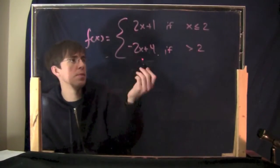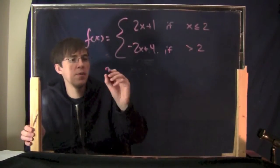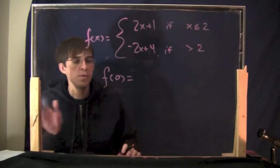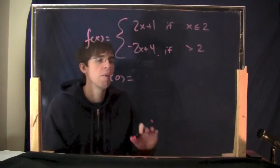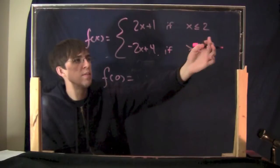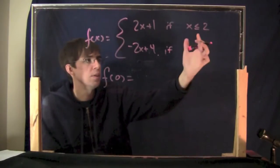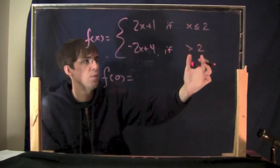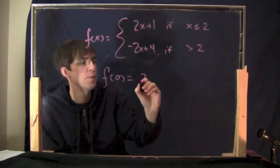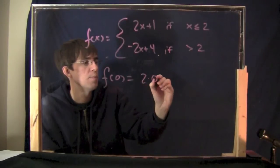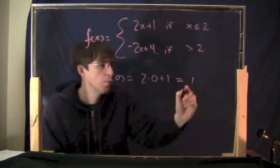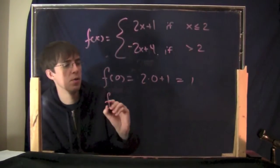What are just some of the values here? What is f of 0? You've got to plug 0 in, but first you have to decide which piece to use. Is it less than 2 or greater than 2? It's less than or equal to 2, so you use the first piece. You go 2 times 0 plus 1, and that is 1. So that's f of 0.